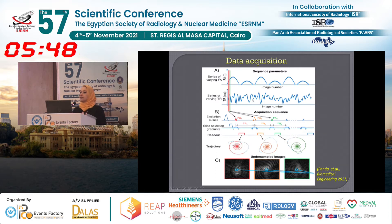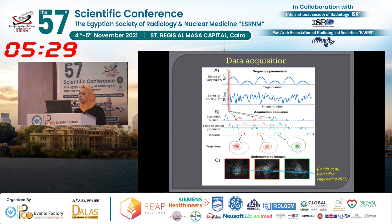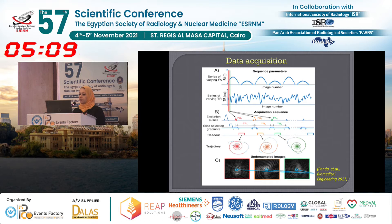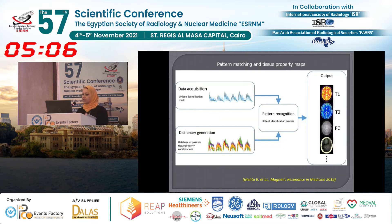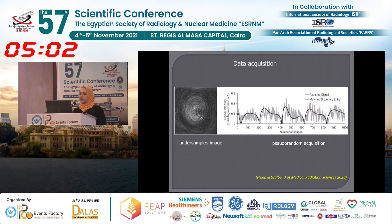Regarding data acquisition, there is a fundamental difference between MRF and conventional MRI in the way data is acquired. Instead of repeating the same single acquisition parameter over time in a specific sequence while keeping all other parameters consistent — which is the case in conventional MRI — in MRF, multiple acquisition parameters such as flip angle and repetition time are varied across the acquisition in a pseudorandom manner, in order to obtain unique signal time courses or fingerprints specific for each tissue type.